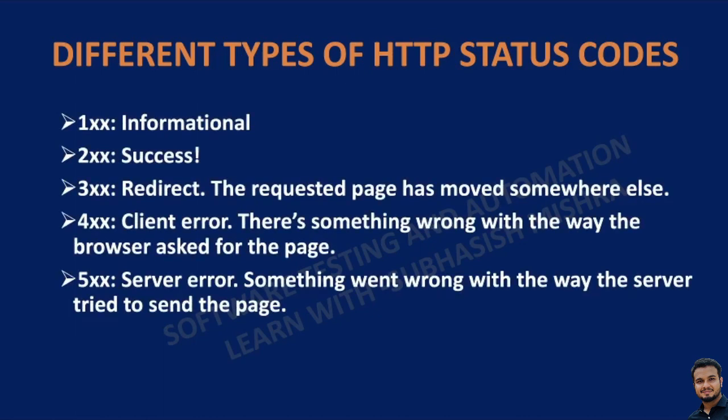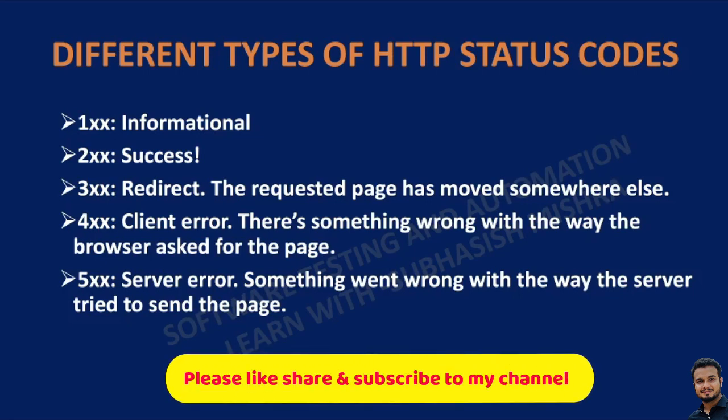There are five ranges of HTTP status codes. Each range defines where the error was encountered and the number defines what the actual error was. 1XX is the 100 series — it is informational.